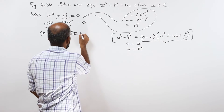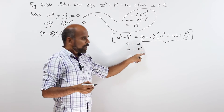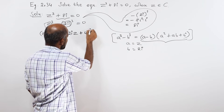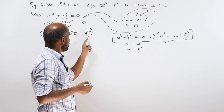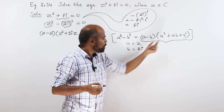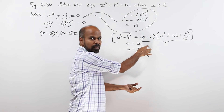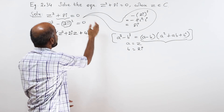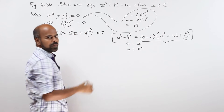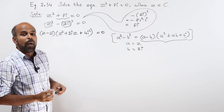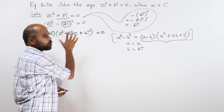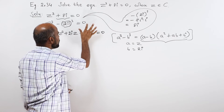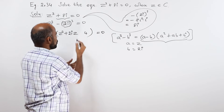Then we have plus b square. b is 2i, so 2i whole square is 4i square. i square value is minus 1, so 4 into minus 1 is minus 4. The final simplification gives minus 4, and this is equal to 0.